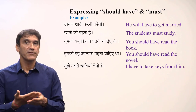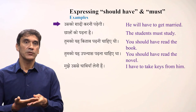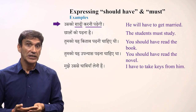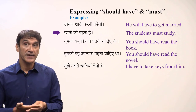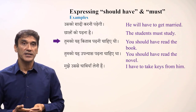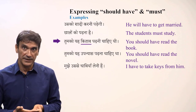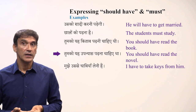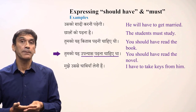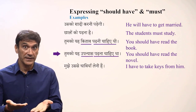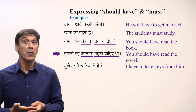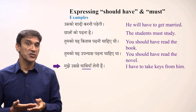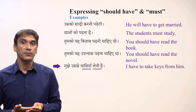Final example sentences with all types of compulsion: usko shadi karne padhegi — he will have to get married; shadi is feminine singular, so karne padhegi. Chhatron ko padhna hai — the students must study; no object, so verb is masculine singular. Tumko ye kitab padni chahiye thi — you should have read the book; kitab is feminine, so padni chahiye thi. Tumko ye upanyas padhna chahiye tha — you should have read the novel; upanyas is masculine, so padhna chahiye tha. Mujhe usse chabiyan leni hai — I have to take keys from him; chabiyan is feminine plural, so leni hai.